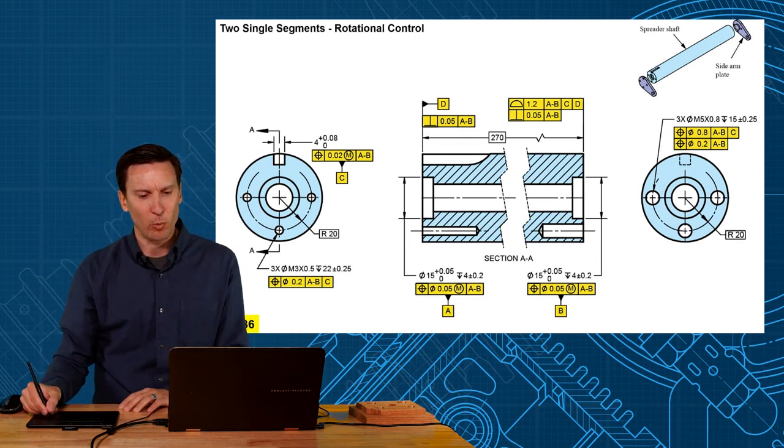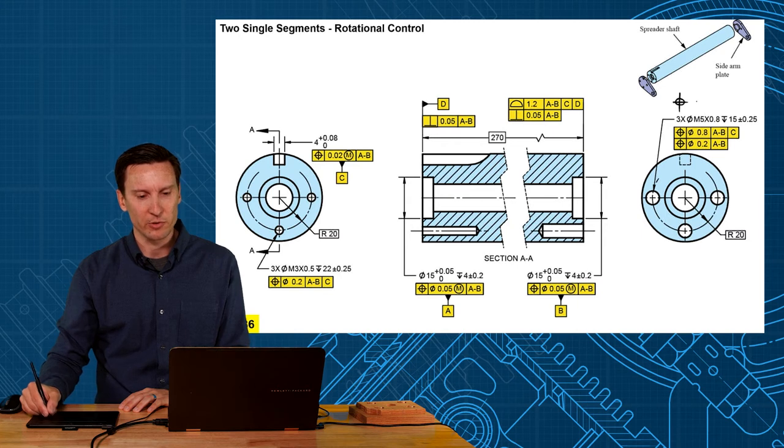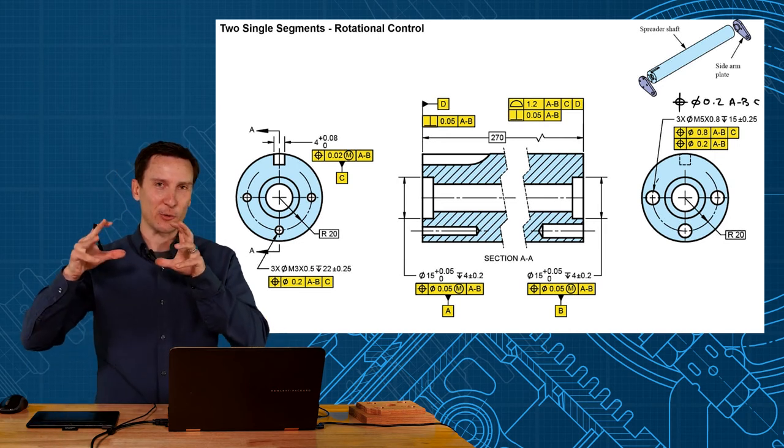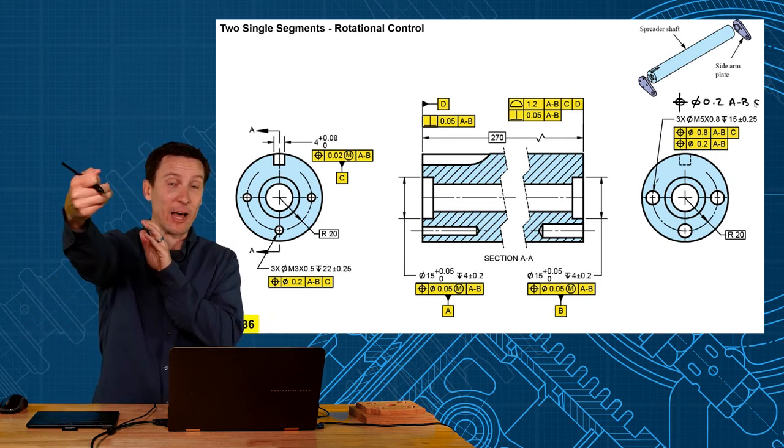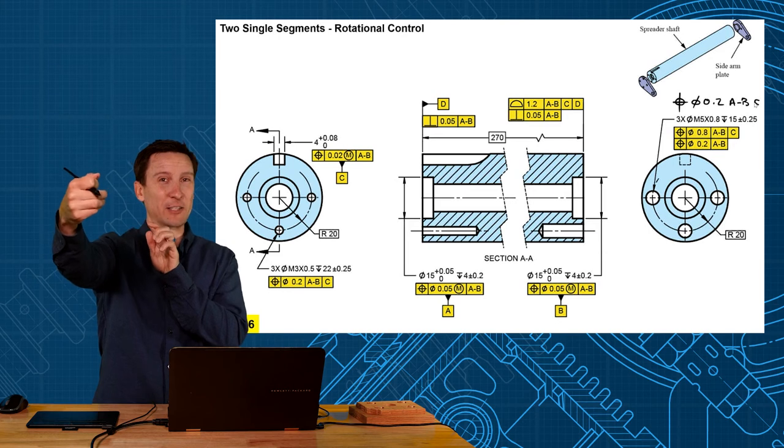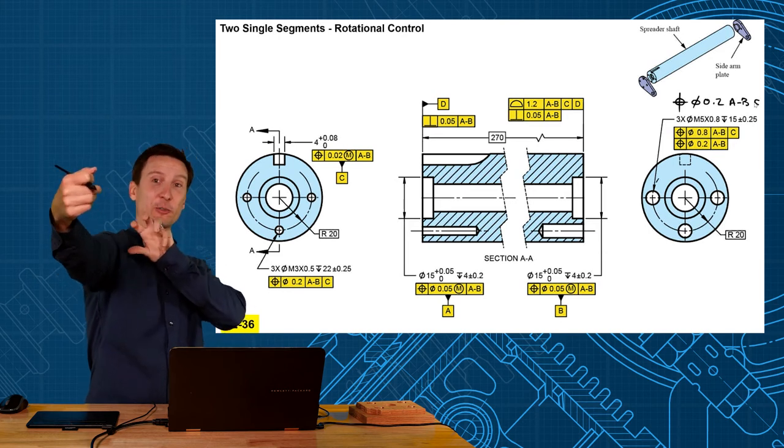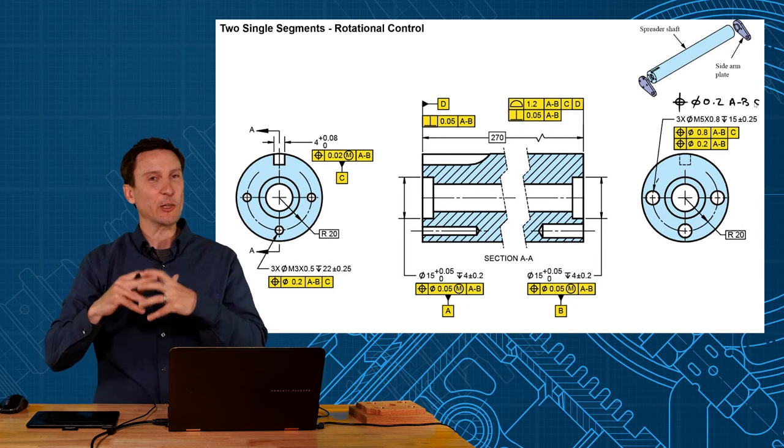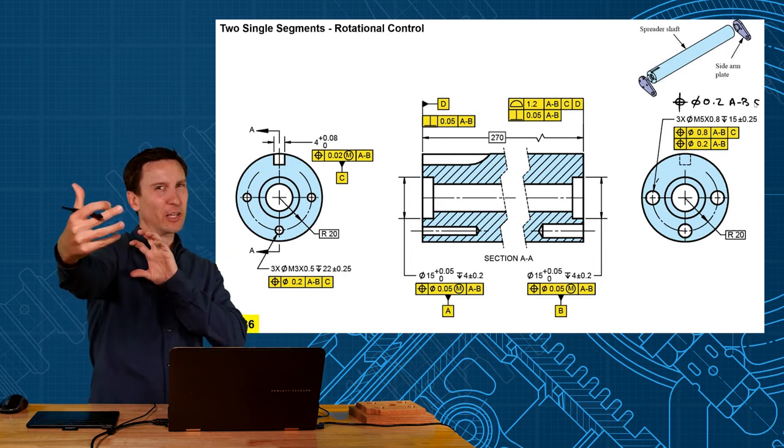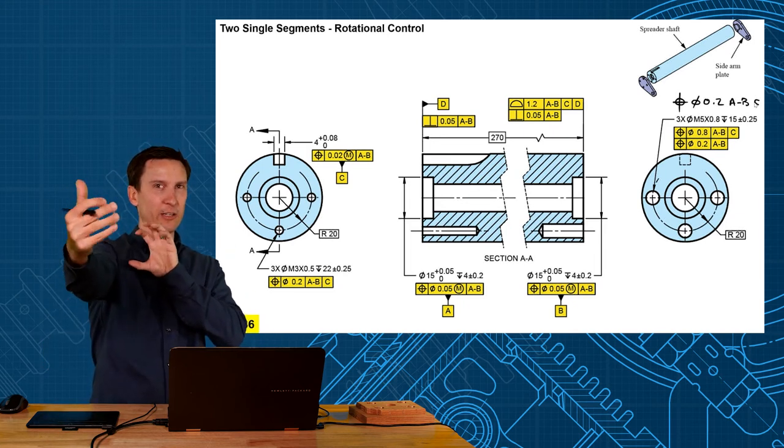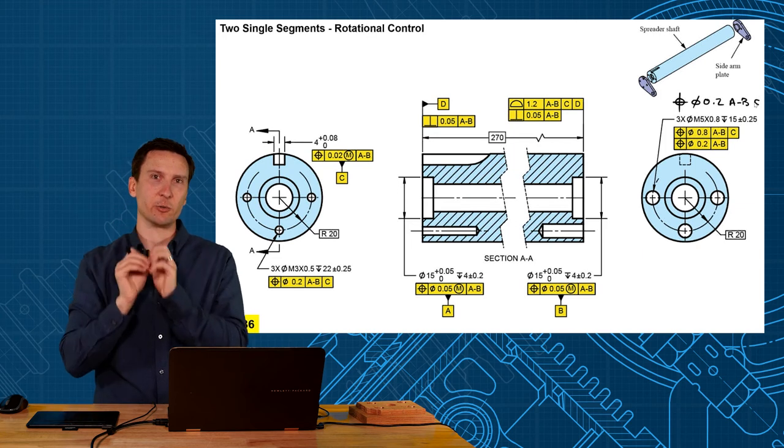Sometimes people look at this and say why do you make it so complicated? Why don't you just do a position tolerance within 0.2 to A-B-C? That would functionally get those holes related to the axis and the slot, but manufacturing-wise that's a lot more difficult to make sure that these holes are clocked to the slot on the other side. So we loosen this up and say I don't really care what the location to the slot is as long as they're on center and to each other.